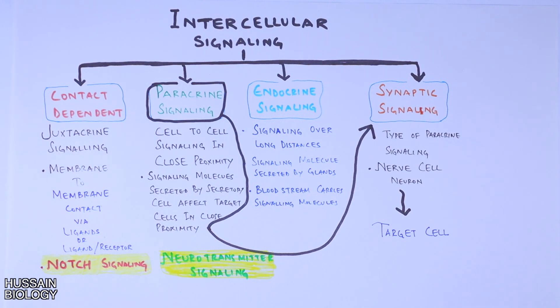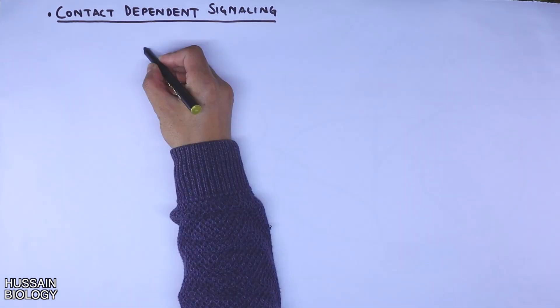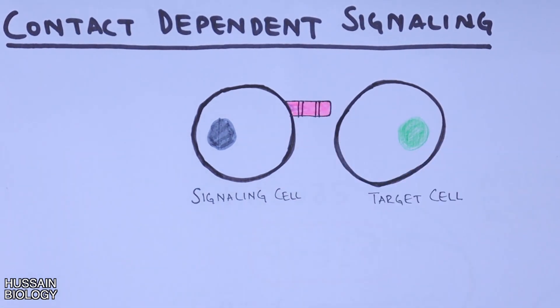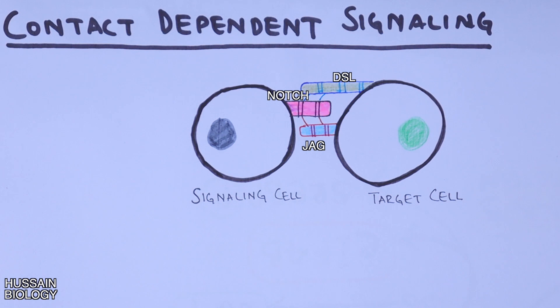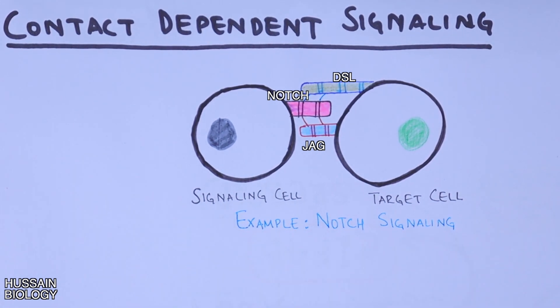Now let's see these different types of signaling through diagrams and animations. First, contact-dependent signaling or extracrine signaling — it occurs between cells through contact. In this diagram, two adjacent cells interact through ligands. On the signaling cell we have the notch ligand, and on the target cell we have DSL1 and jagged. Through their binding and interaction, the signaling is initiated in the form of notch signaling.